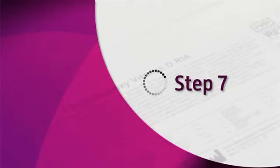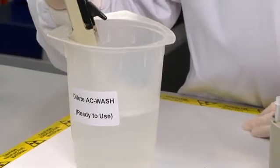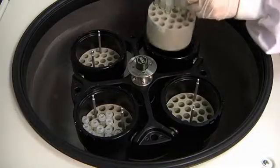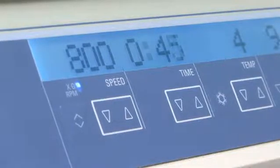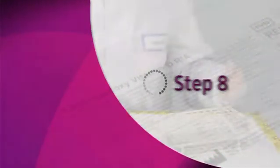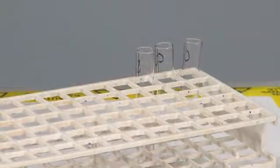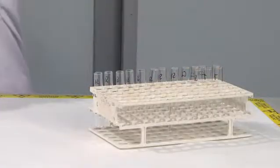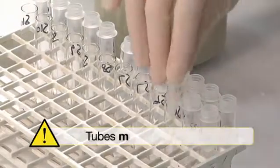Step 7: Prepare labeled borosilicate glass tubes, one for each immunocapsule, and transfer the immunocapsules to the glass tubes. Tubes must be borosilicate.